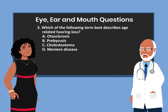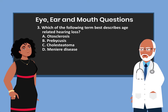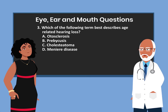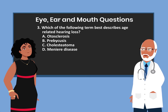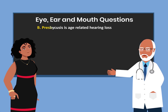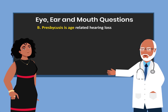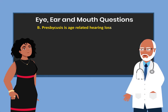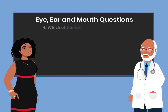Question 3. Which of the following terms best describes age-related hearing loss? A. Otosclerosis. B. Presbycusis. C. Cholesteatoma. D. Meniere disease. The answer is B. Presbycusis is age-related hearing loss.